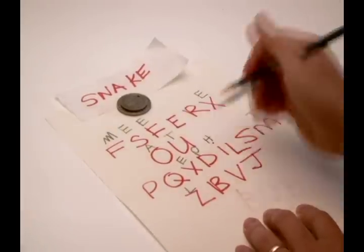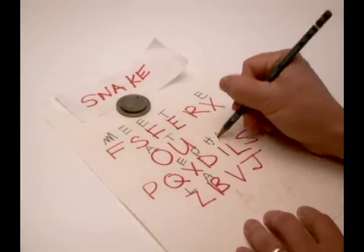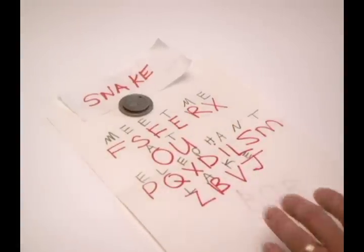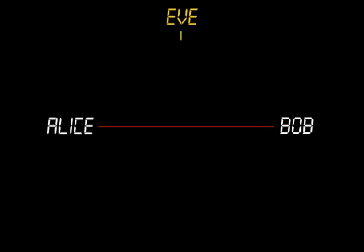Then the encrypted message is sent openly to Bob. Bob decrypts the message by subtracting the shifts according to the secret word he also has a copy of. Now imagine a code breaker, Eve, intercepts a series of messages and calculates the letter frequencies. She will find a flatter distribution, or a lighter fingerprint.